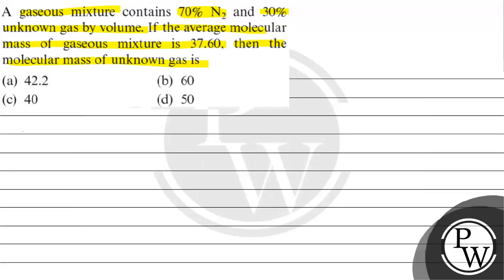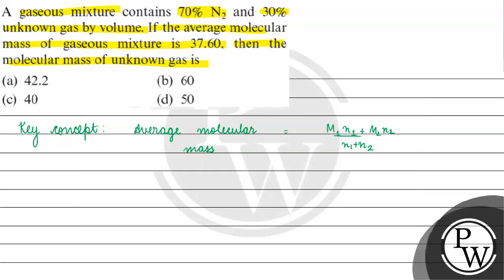The key concept for this question is average molecular mass. If we have two components, it is basically M1·N1 plus M2·N2 divided by N1 plus N2, where M1 and M2 are the molecular masses of the individual components, Component 1 and 2, and N1 and N2 are the number of moles.